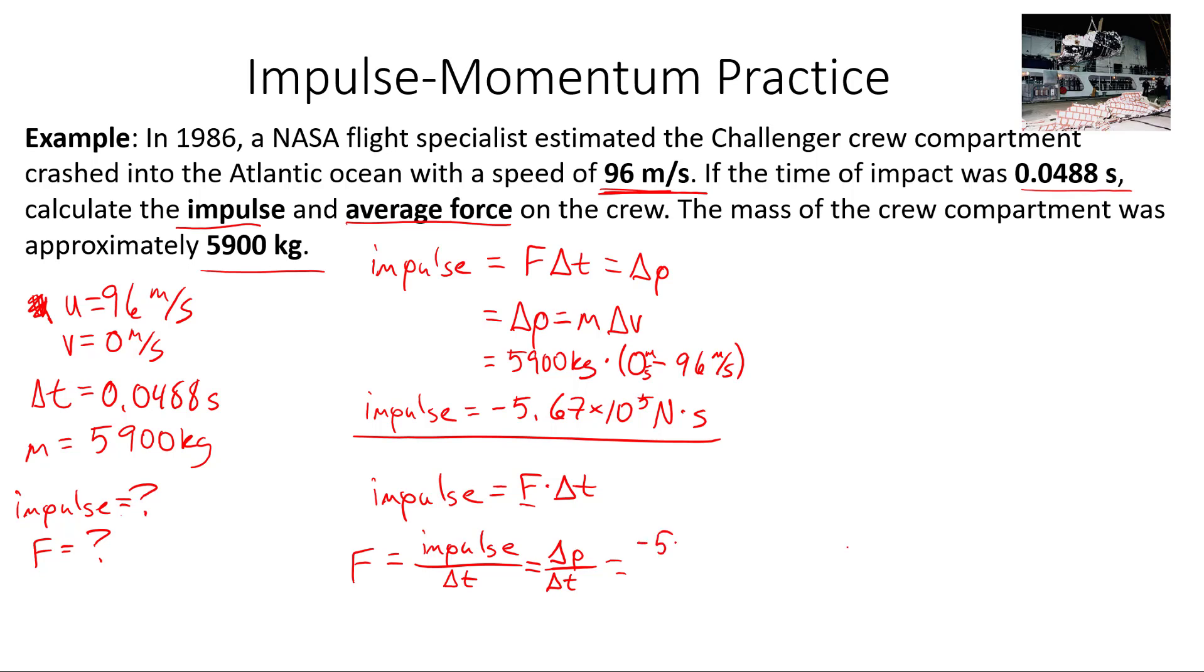Our impulse was negative 5.67 times 10 to the 5 newton-seconds. By the way, that negative sign just tells us the direction. We implicitly said down towards the earth is positive when we chose U to be positive. Divide it by our time, which is 0.0488 seconds. If we divide them out, we get a force of 1.16 times 10 to the 7 newtons. This is an incredibly large amount of force, and so everyone in that crew compartment was unfortunately killed pretty instantly.